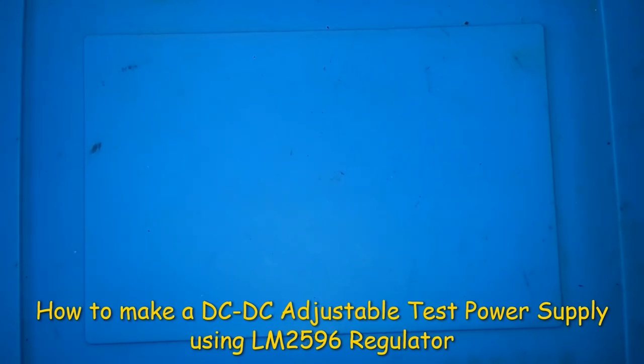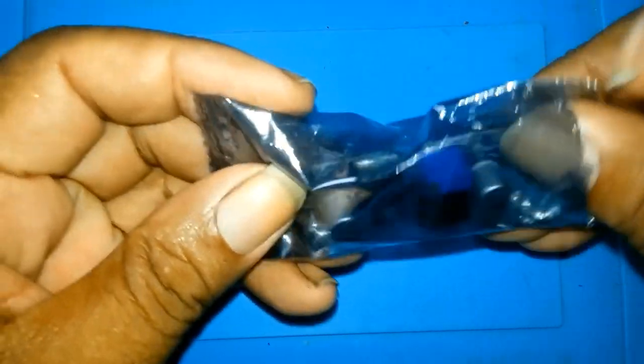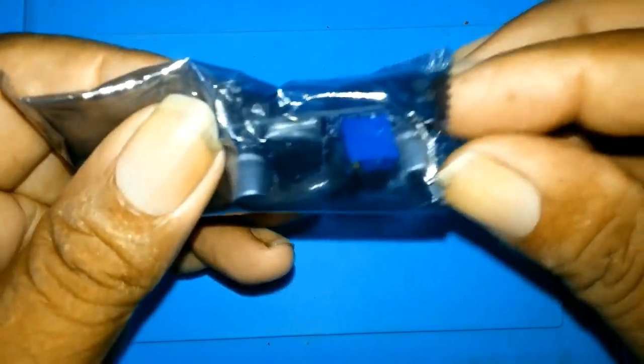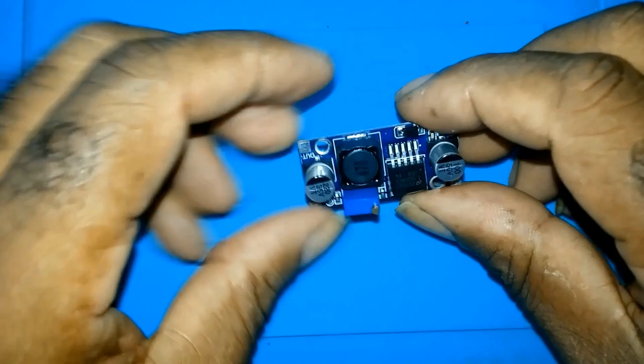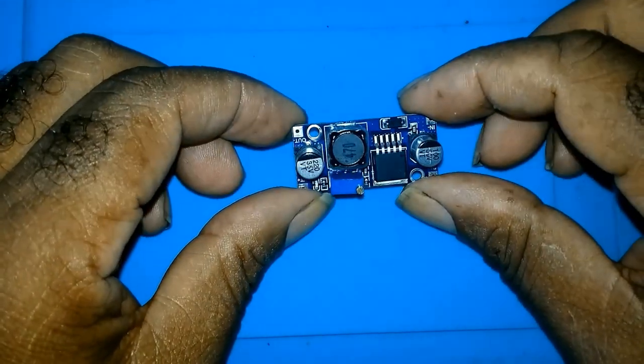In this video I'm using a LM2596 DC to DC step down buck converter power module to make a simple but very useful test power supply. This is the DC to DC buck converter.